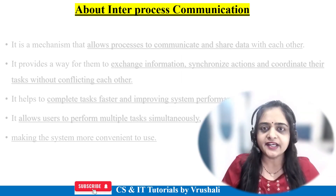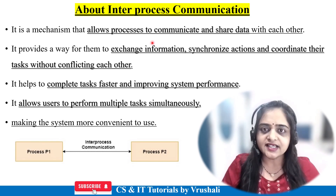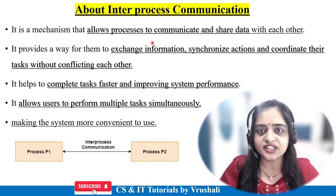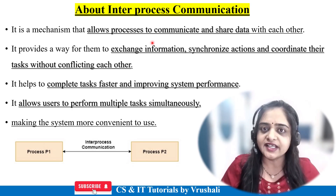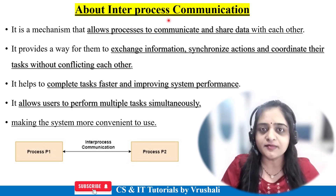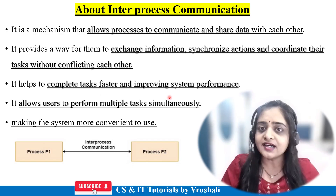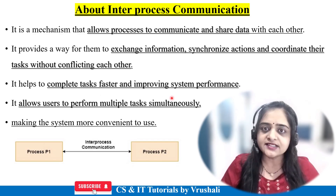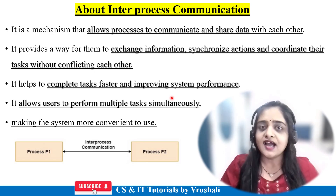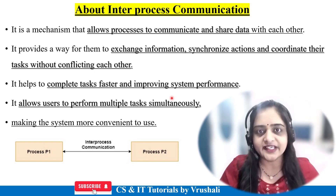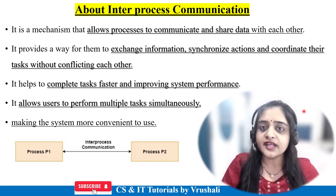The first question is: what exactly is inter-process communication? In an operating system there are multiple processes, and these processes communicate with each other and share information with each other. All these tasks are performed accurately and efficiently due to the inter-process communication mechanism. This mechanism helps the operating system perform tasks faster and improves system performance. It helps perform multiple tasks in parallel at the same time without conflicting with each other, making your system more convenient and reliable.